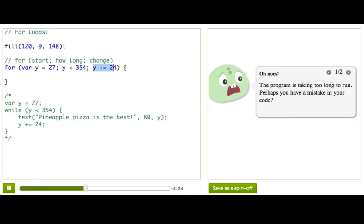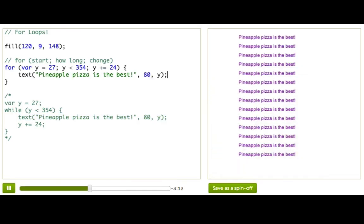And then you need to put how you're going to be changing things. So here we're going to be changing by increasing y by 24. Then, last, you just have to do whatever you want it to do inside the for loop, so we'll go ahead and write that text there. And there we have it, pineapple pizza is the best, and everybody will know.